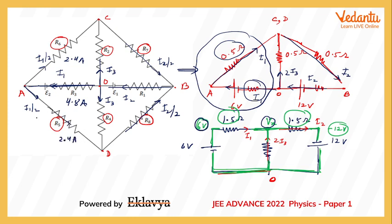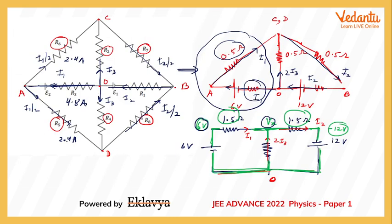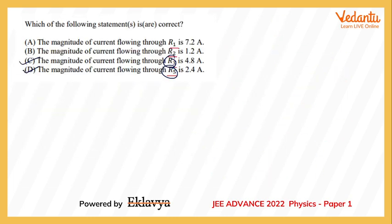Checking the options: current through R3 is 4.8 A and current through R5 is 2.4 A. Both of these options are confirmed correct. The options do not mention R6, so we move on to check R1 and R2.